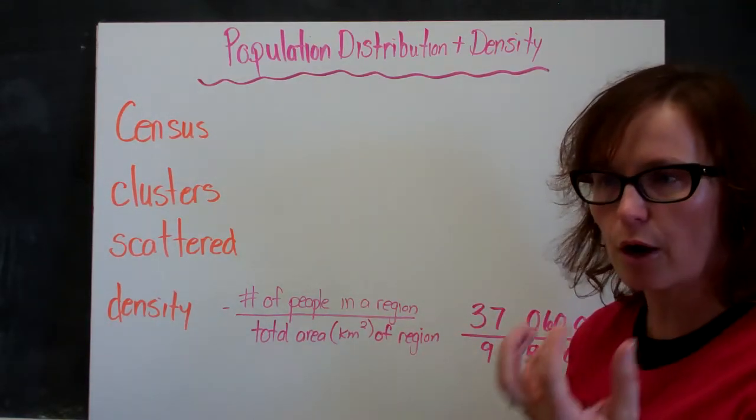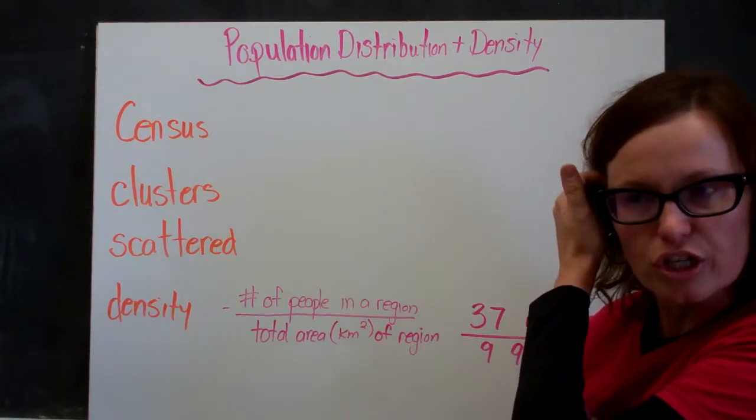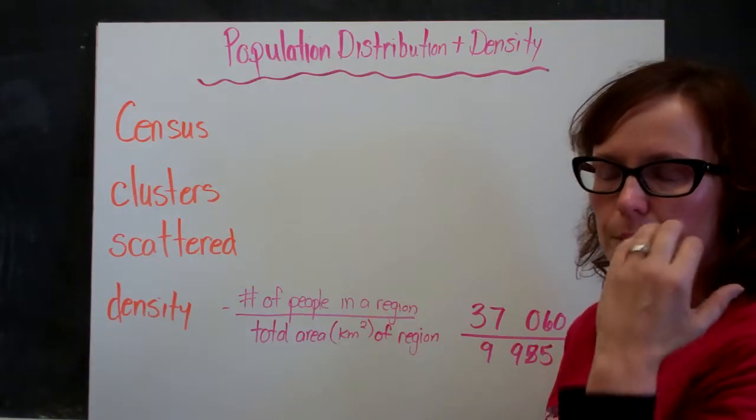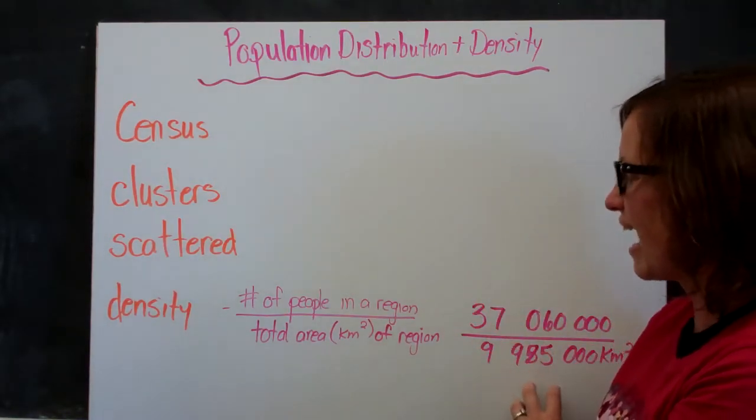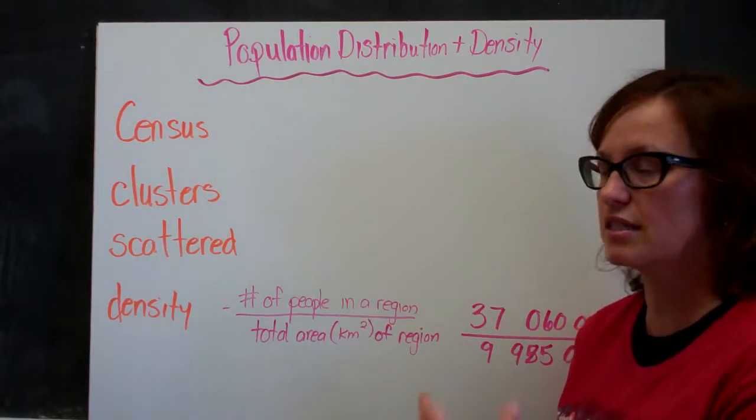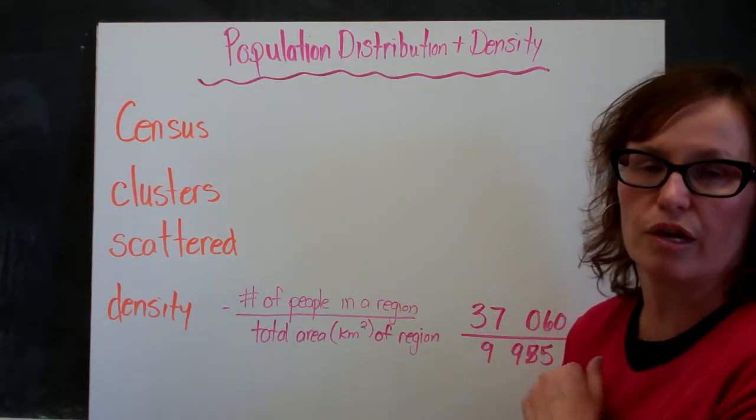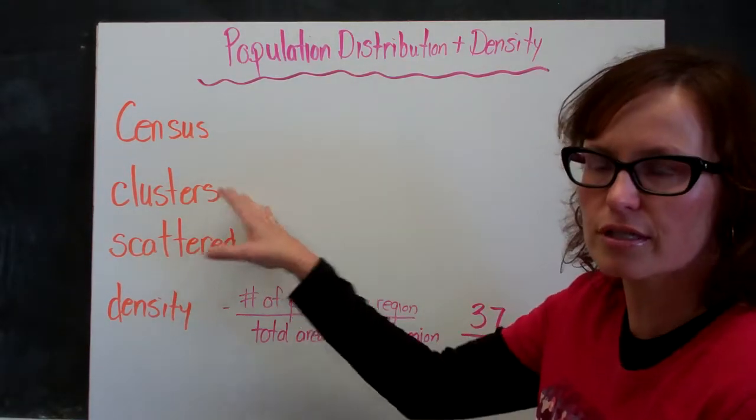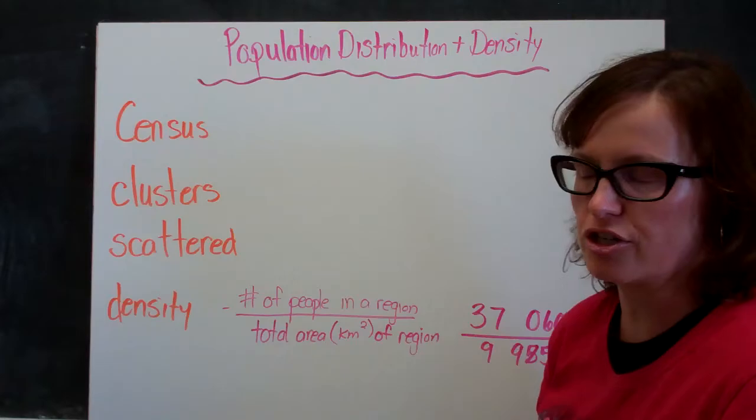But if we think about the city of Toronto, which is a much smaller area and much higher population, the population density is much higher. It's going to be in the thousands of how many people live within a kilometer square in Toronto. So you can have clusters within a larger nation.